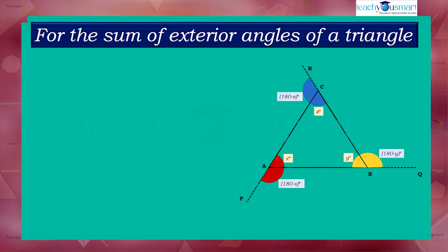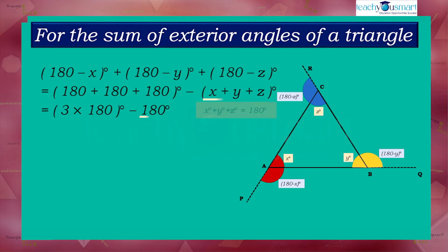Now to find the sum of exterior angles, we will add up all the angles outside the triangle. That is, 180 minus X plus 180 minus Y plus 180 minus Z equals 180 plus 180 plus 180 minus X plus Y plus Z, which equals 3 multiplied by 180 minus 180, equals 540 minus 180, equals 360 degrees.